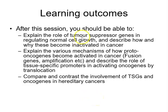After this session, you should be able to explain the role of tumour suppressors as regulators of normal cell growth and how these become inactivated in cancer. You should also be able to explain mechanisms of proto-oncogene activation — including gene fusions, amplification, and specific mutations — and explain why tumour suppressor genes are predominantly involved in hereditary cancers whereas oncogenes are not, with particular emphasis on the retinoblastoma tumour suppressor gene.